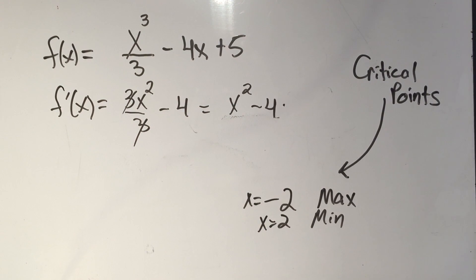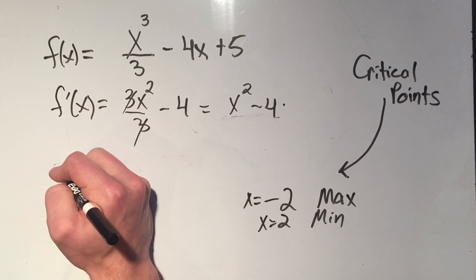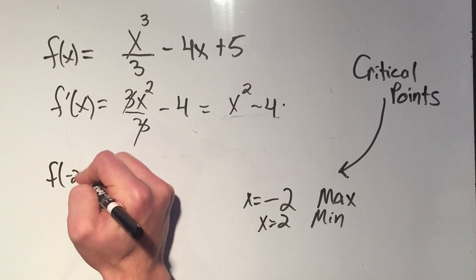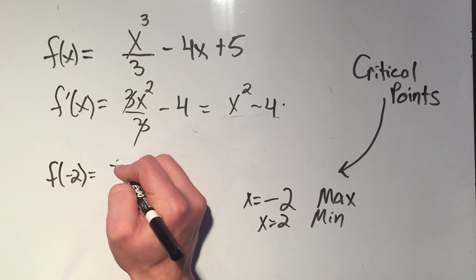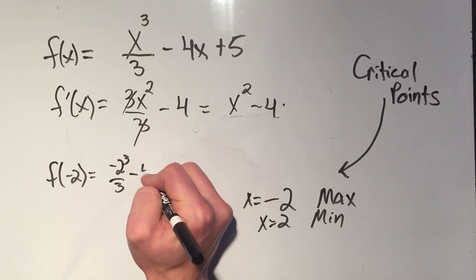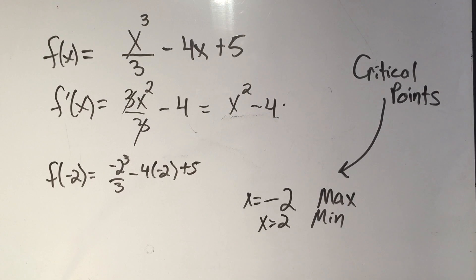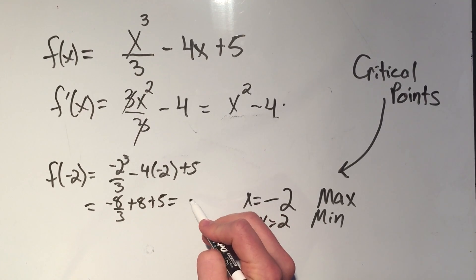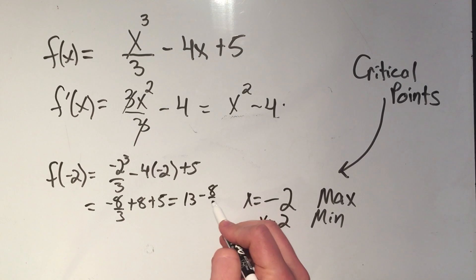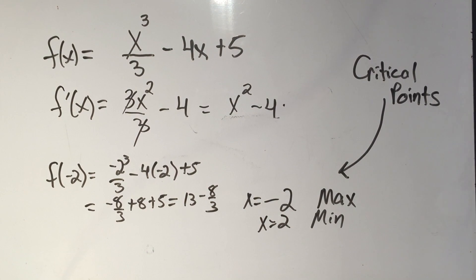If you actually want the maximum or the minimum values, you'll have to plug these things in. So let's see. So f of negative two, if I plug negative two in, that'll be negative two cubed over three, minus four times negative two plus five. The numbers might not be nice here, I just made this problem up. Negative two cubed is negative eight over three, minus a minus is a plus eight plus five. So that's going to be like 13 minus eight thirds, I'm not even going to bother combining that fraction.